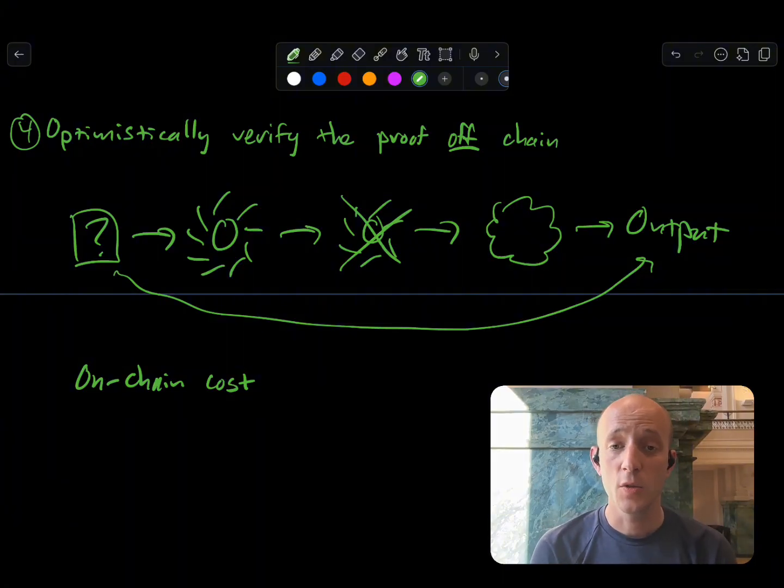The second thing is how we actually do the computation. In a BitVM2-type design, we do kind of a circuit-type computation. In the BitVM2 design, we sort of do a circuit-based verification, but we have to do it in Bitcoin script. Whereas with a garbled circuit-based design, we can do it in a much cleaner and elegant way that's easier to write, easier to reason about, and easier to audit. That's better for everybody.